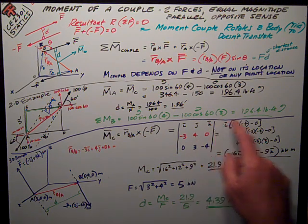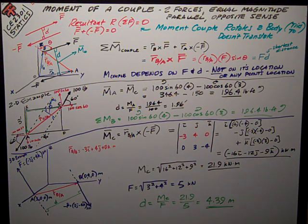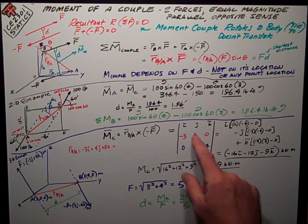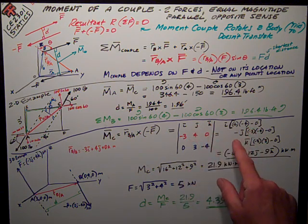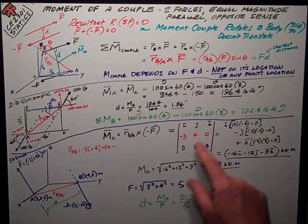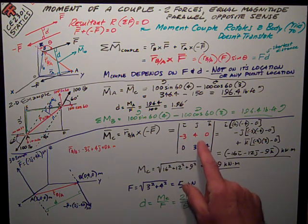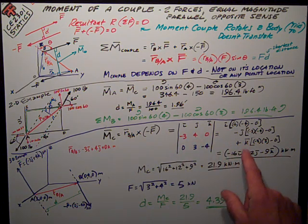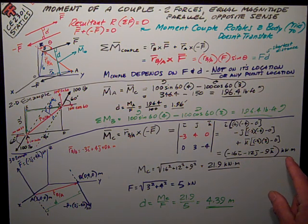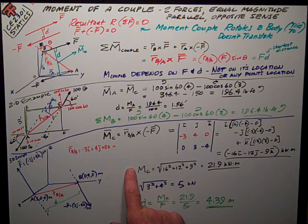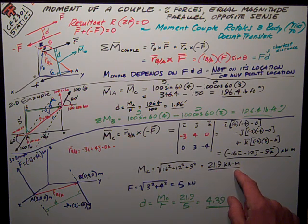There I've got I, J, and K. Remember, unit on the top, position in the middle, force on the bottom. Evaluate it. I times 4 times negative 4 minus 0. Similarly, negative J. Evaluate with that little determinant. Plus K. Negative 3 times 3 minus 4 times 0. To do the math, I get negative 16I minus 12J minus 9K kilonewton meters. The scalar of that is just the square root of the sum of the squares, 16, 12, and 9, 21.9 kilonewton meters.